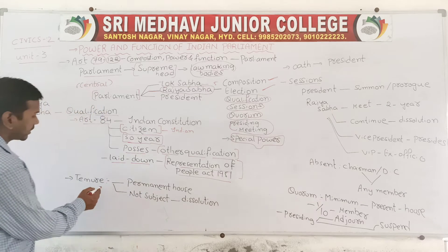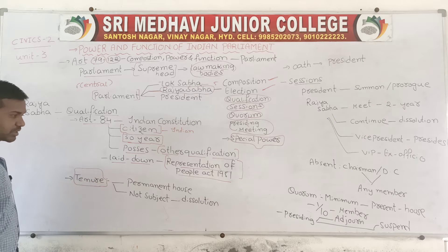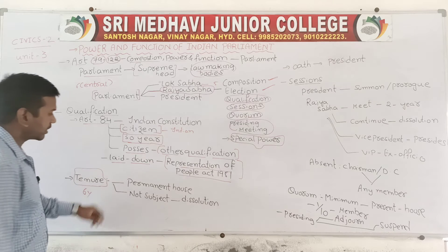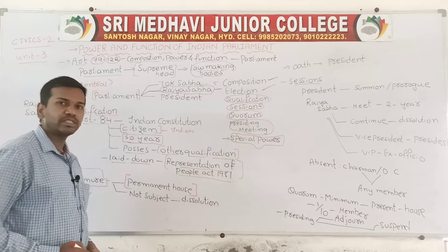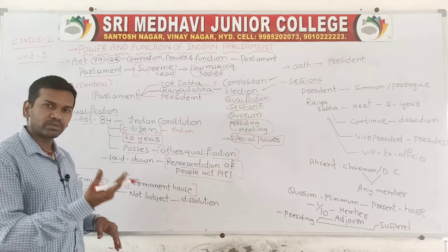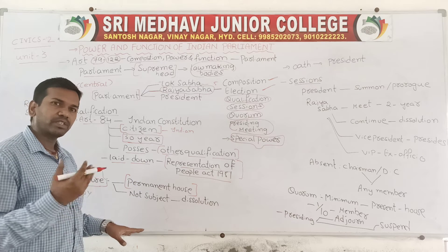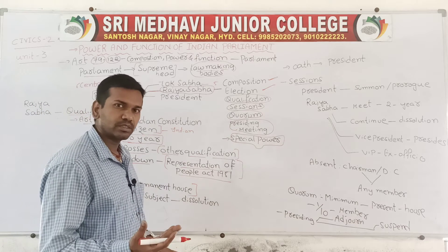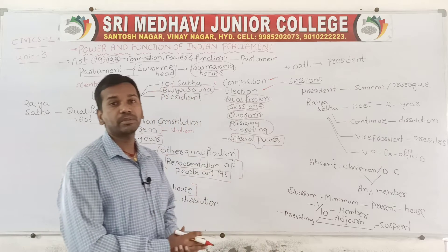Now, regarding tenure — the term of a Rajya Sabha member is 6 years. Rajya Sabha is a permanent house which cannot be dissolved. Unlike Lok Sabha, where all members retire completely after 5 years, in Rajya Sabha all members do not retire at the same time.